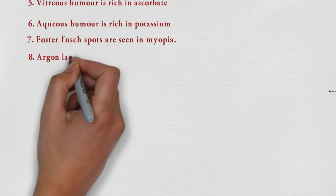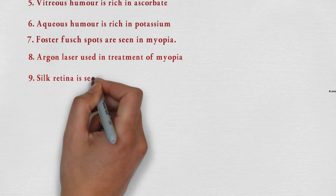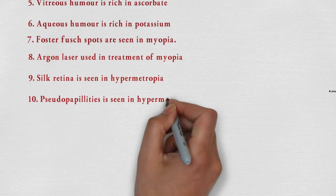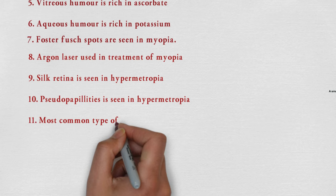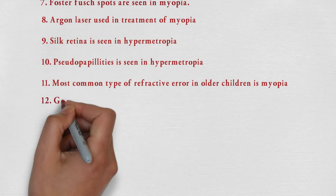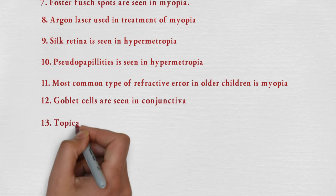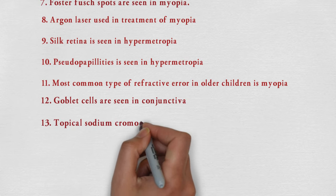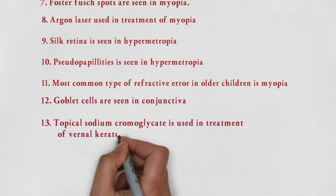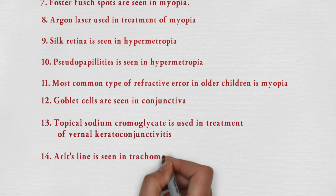Foster-Fuchs spots are seen in myopia. Argon laser is used in treatment of myopia. Silk retina is seen in hypermetropia. Pseudopapillitis is seen in hypermetropia. Most common type of refractive error in older children is myopia. Goblet cells are seen in conjunctiva. Treatment of vernal keratoconjunctivitis is topical sodium cromoglycate.